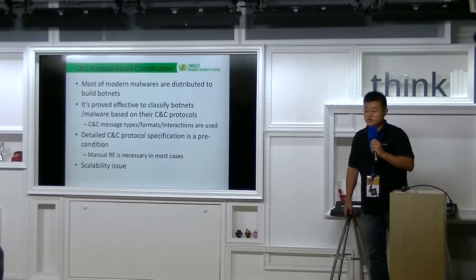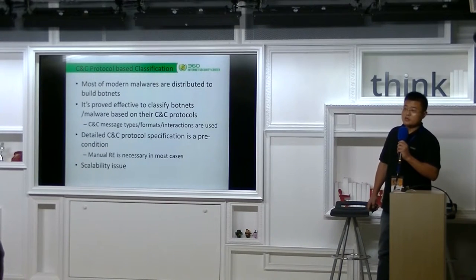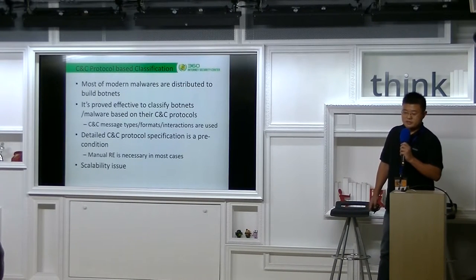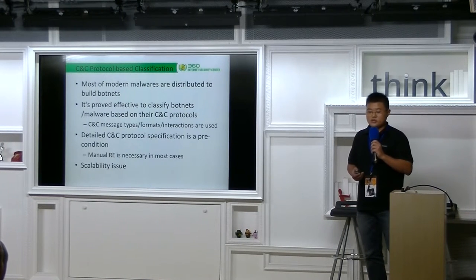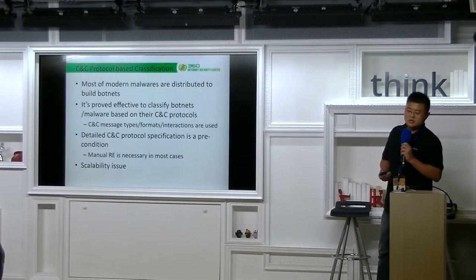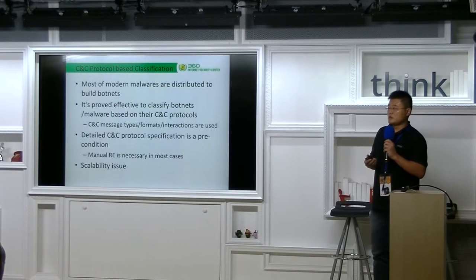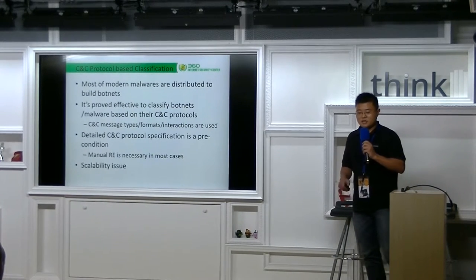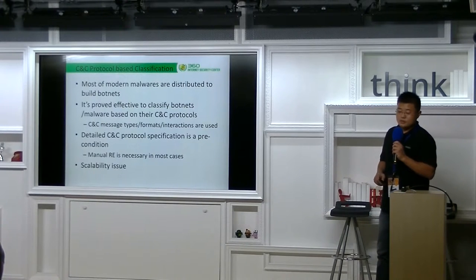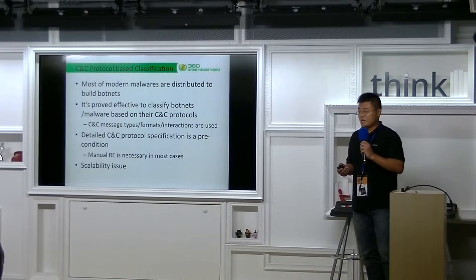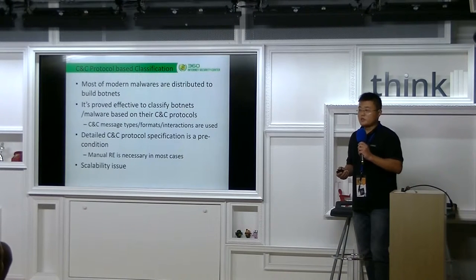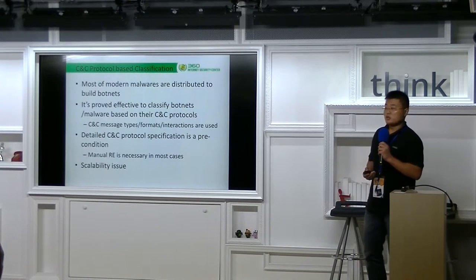As you know, most modern malwares are distributed to build botnets. They can be used to make money by launching DDoS attacks, or spamming, or click fraud, or other bad things. It's proven effective that classifying botnets or malware based on their C&C protocols.